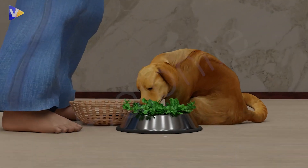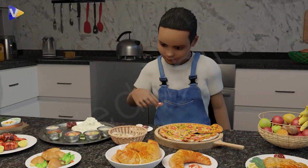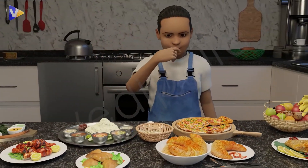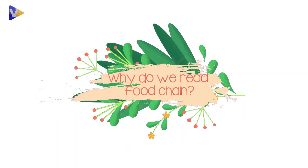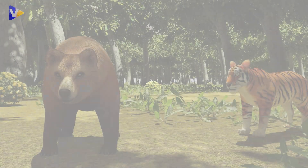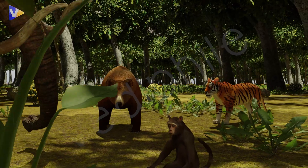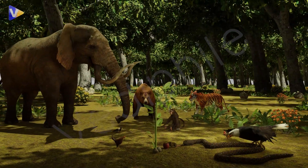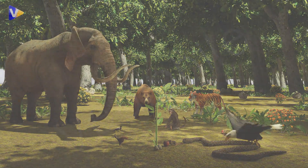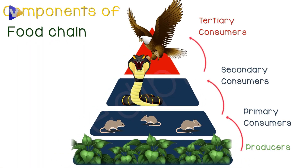But why do we eat food? Because we are all living organisms, and all living organisms need energy to live — we get that energy from food only. So why do we study food chains? Because a food chain describes how different organisms eat each other for survival. So let's now understand the different components of a food chain.